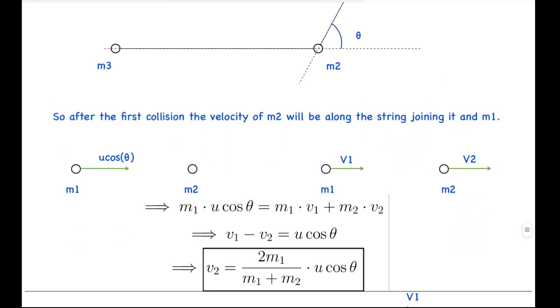It's coming towards m2, and after the collision, let's say they have velocity v1 and v2. Here, simply by momentum conservation and as it's an elastic collision using coefficient of restitution equals 1, you can come up with these two equations and solve them to get the value of v2, which is the velocity of m2 just after the collision, will be 2m1 by (m1 + m2) times u cos theta. This was just after collision 1.